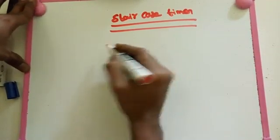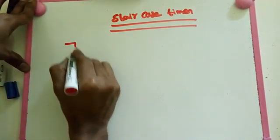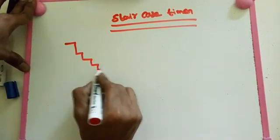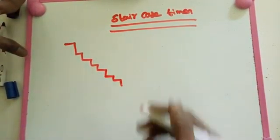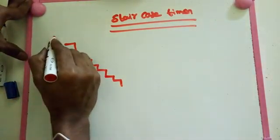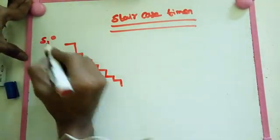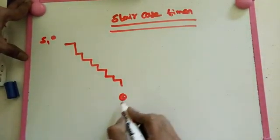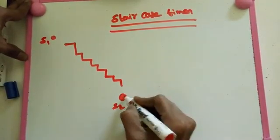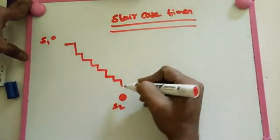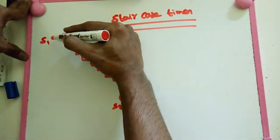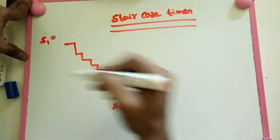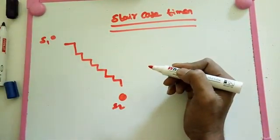First of all we already know staircase switching function. That means we have steps on here. For example I take steps, or we have some walking path also. We have one switch on here, another switch on here. So we push a switch on here and go. After some time we reach here, after that we switch off the switch. So this is our staircase switching.